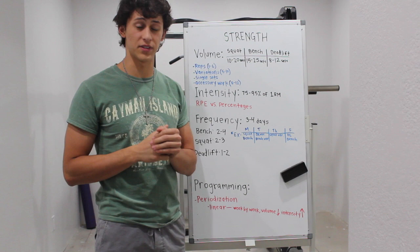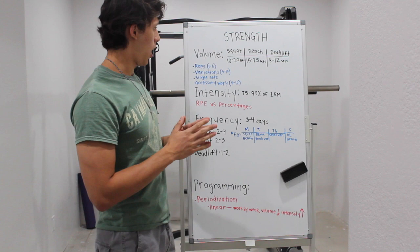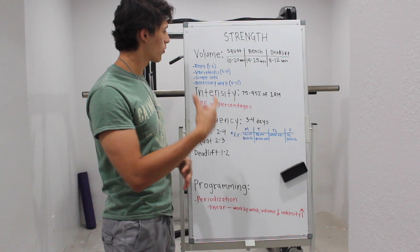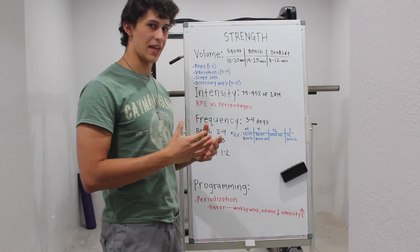With strength, the general amount of repetitions you want to stick around with is one to six. With variations, that's different and you want to stay around five to ten reps with that.